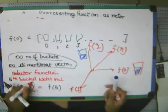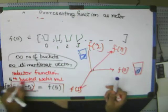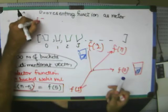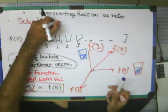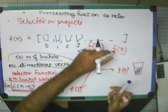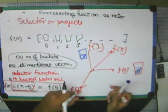And therefore, what we say this, this delta function as selector or the projector. It projects the value of function in different dimensions.